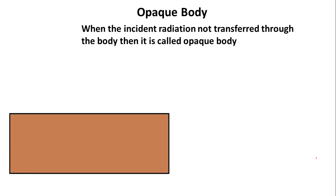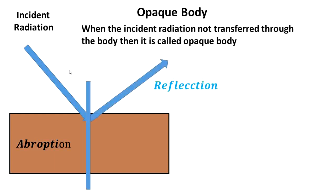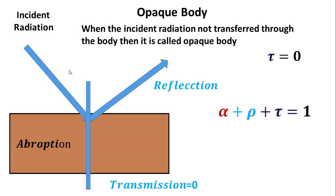What do we mean by an opaque body? When incident radiation is not transmitted through the body, it is called an opaque body. There is only absorption and reflection — no transmission. Therefore, tau equals 0. Since alpha plus rho plus tau equals 1 and tau equals 0, we get alpha plus rho equals 1.